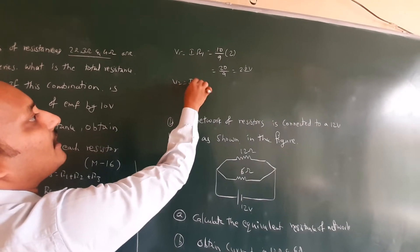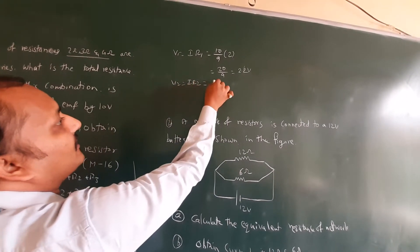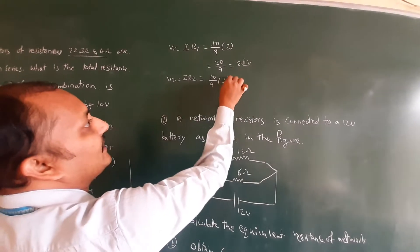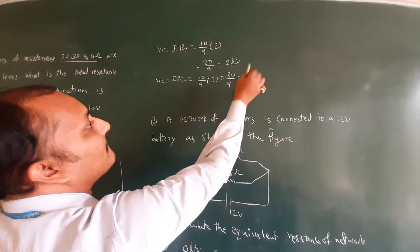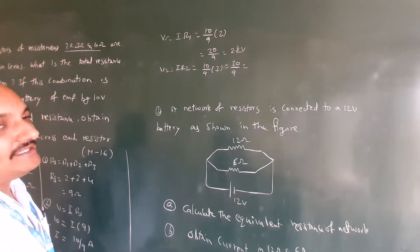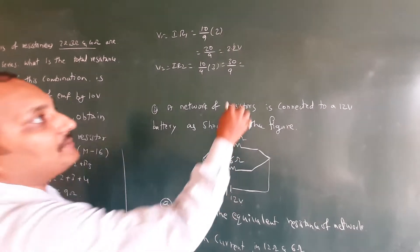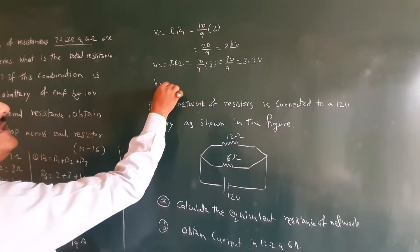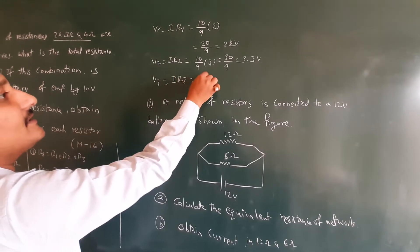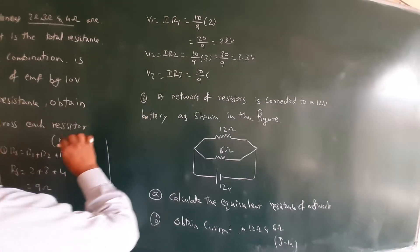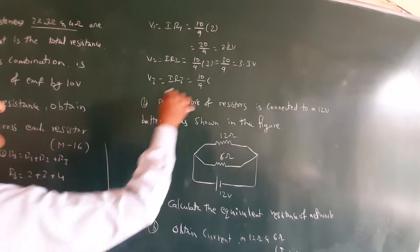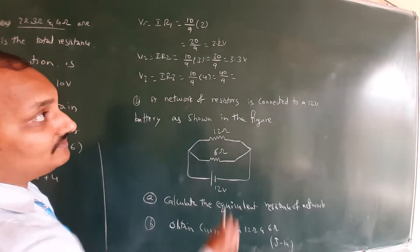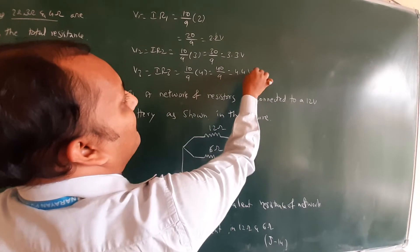V2 = I × R2 = (10/9) × 3 = 30/9, which is approximately 3.3 volts. V3 = I × R3 = (10/9) × 4 = 40/9, which is approximately 4.4 volts.